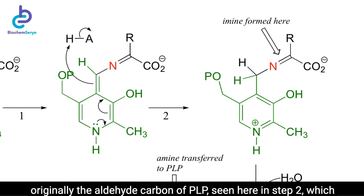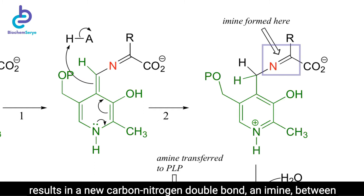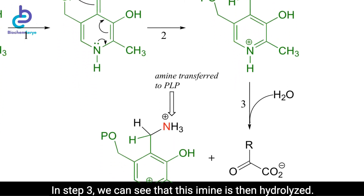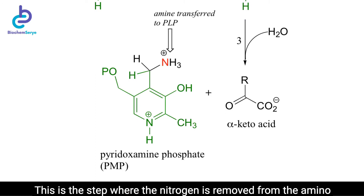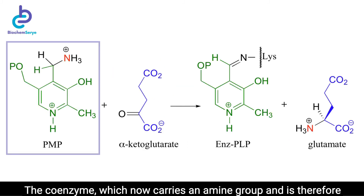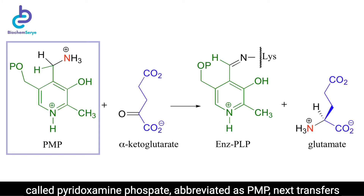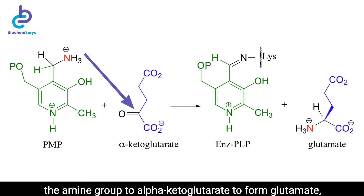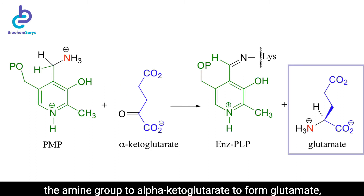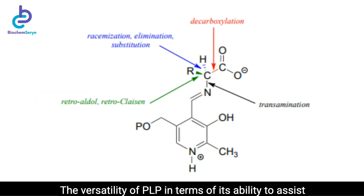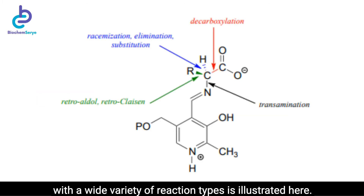This results in a new carbon-nitrogen double bond — an imine between the alpha carbon and the nitrogen of the original amino acid. In step 3, this imine is then hydrolyzed. This is the step where the nitrogen is removed from the amino acid to form an alpha-keto acid, which can be degraded further. The coenzyme, which now carries an amine group and is therefore called pyridoxamine phosphate, abbreviated as PMP, next transfers the amine group to alpha-ketoglutarate to form glutamate through an exact reversal of the whole process.